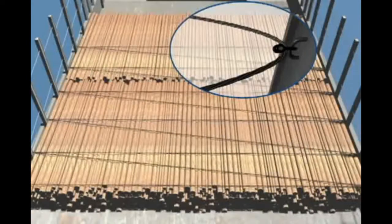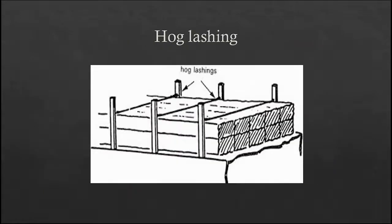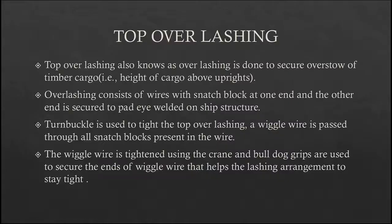These hog lashings must not be too tight as they become taut once logs are loaded on top of them. A second hog lashing rope will be installed if the height of the hatch cover is less than 2 meters. Hog wire helps to keep tension spread evenly throughout the cargo store. In this picture, you can observe hog lashing connecting port and starboard uprights through a wire rope.